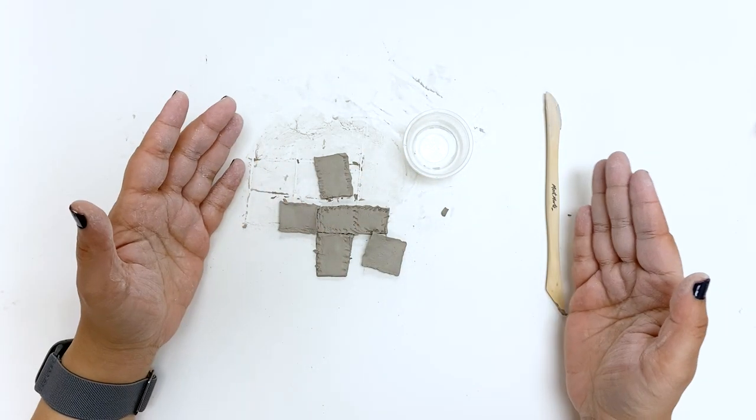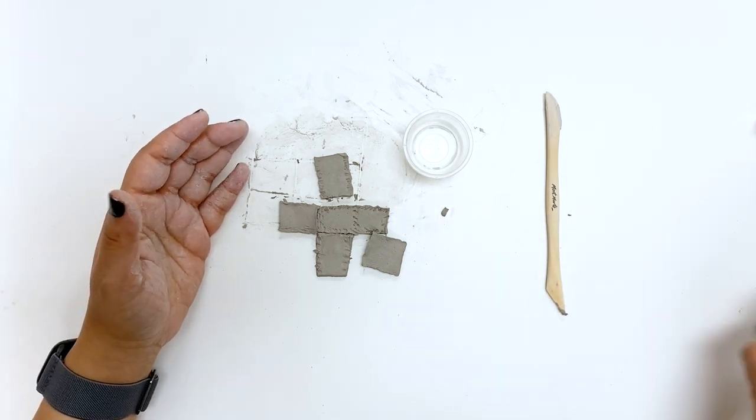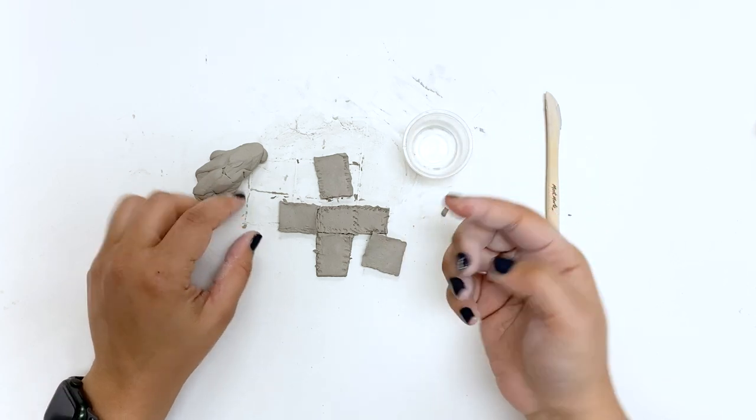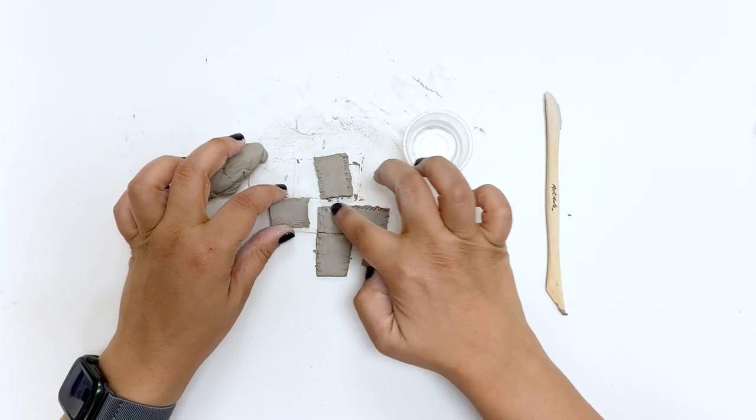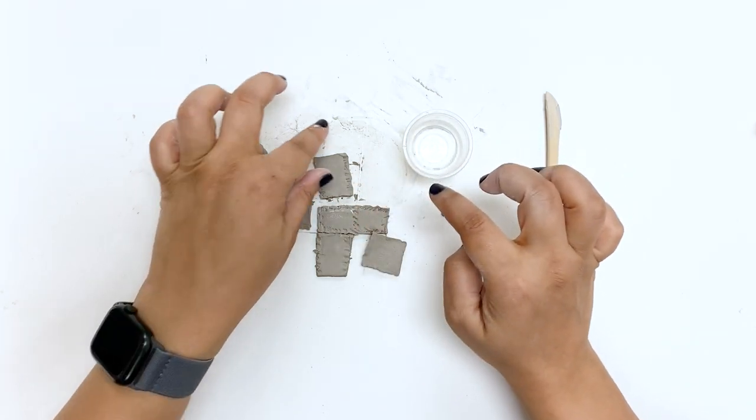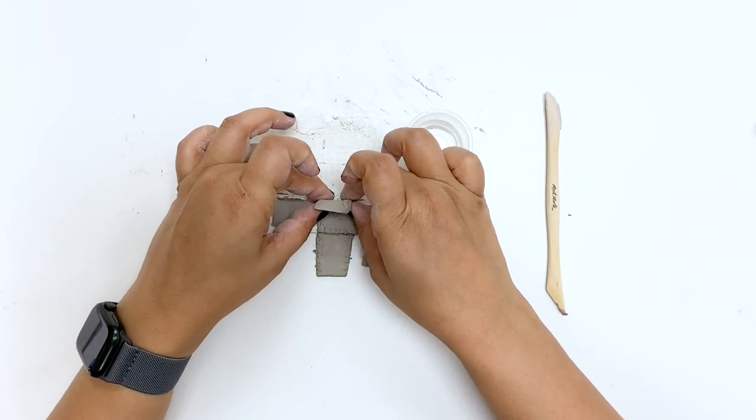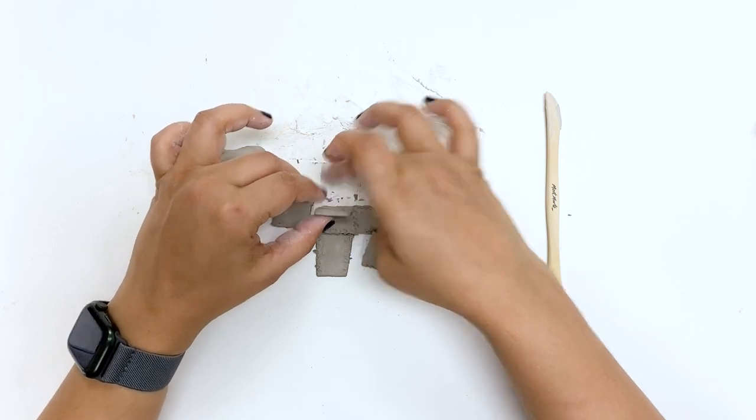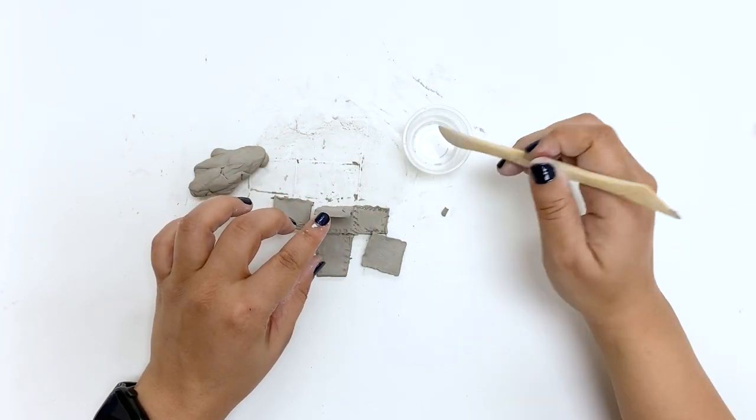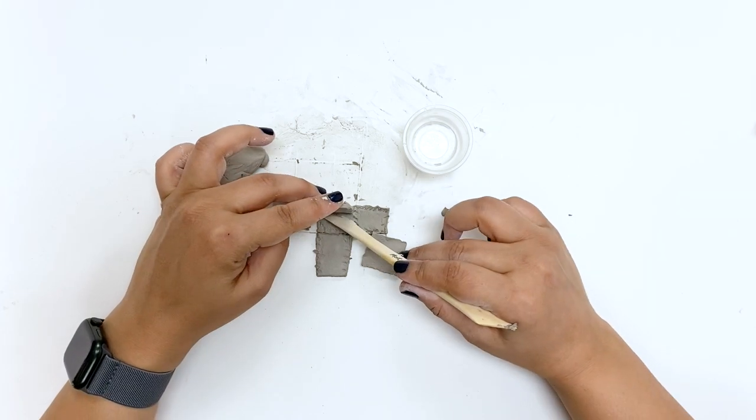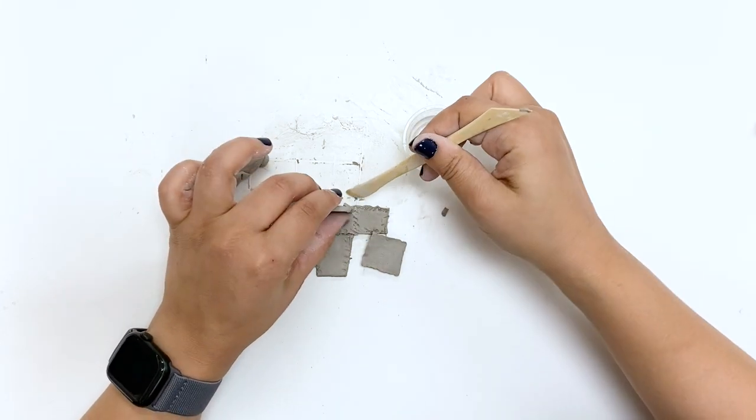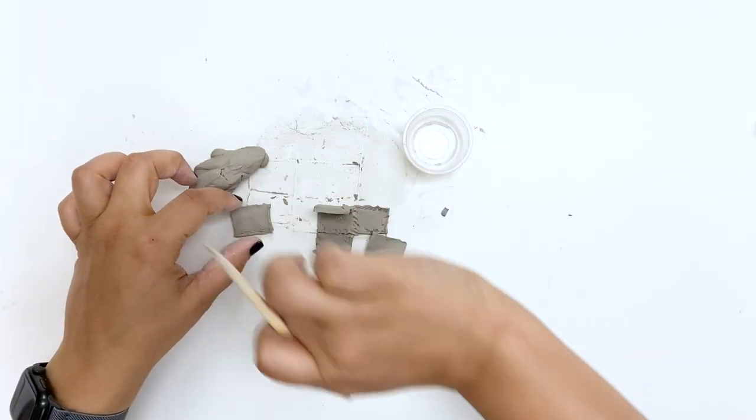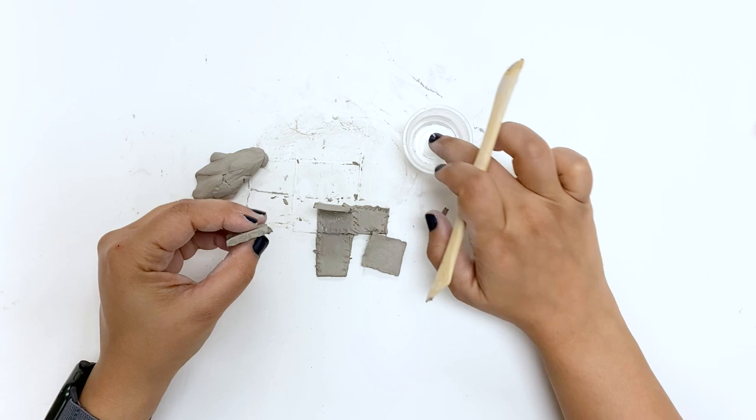Now comes the part where we put everything together. I'm grabbing my extra clay so that I can use it to reinforce the edges if I need be. And then I am dipping my finger into the water and smooshing, that's not a technical term, the edges of my pieces together and using my tool to draw some of the clay from the bottom over the edge of the wall that I just added. And then I'm going to continue doing this on each side.